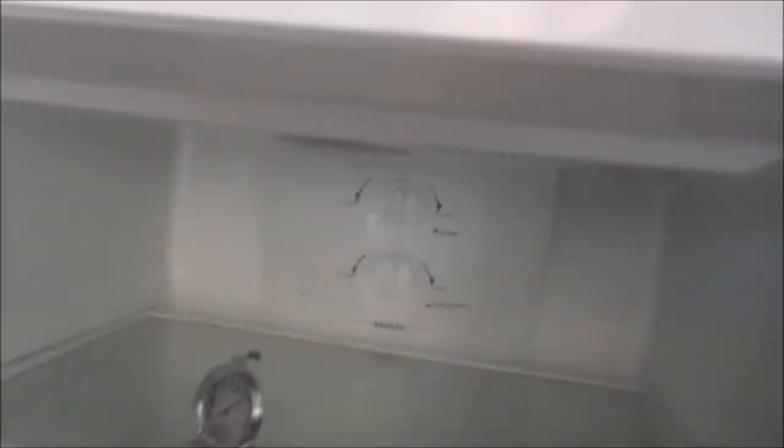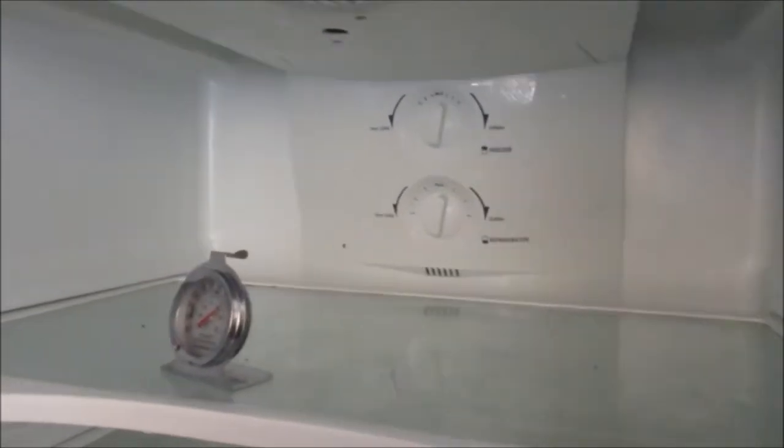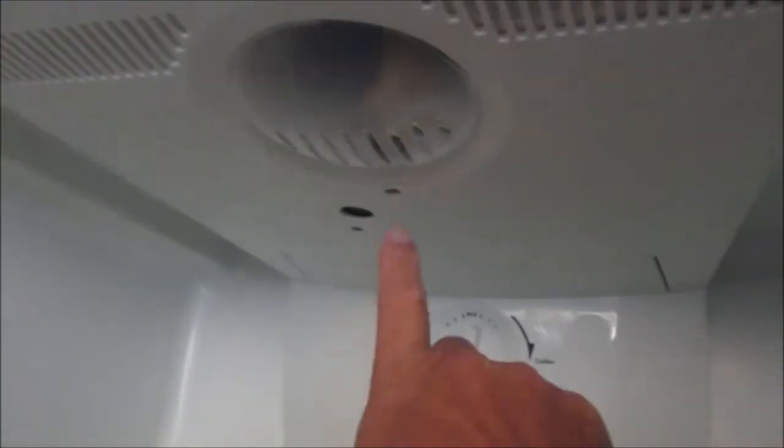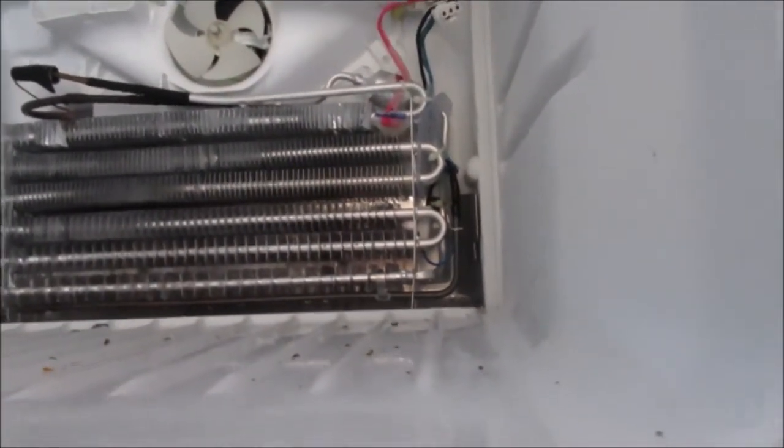What I found is that in this fridge there's a defrost timer. In the fridge compartment on the ceiling here there's a bit of a hole, and what you can do is put a screwdriver in here. When the compressor is running, if you twist, basically turn that screw clockwise, that will turn the compressor off and the heating defrost element on. So when I did that, straight away it tripped out the RCD again.